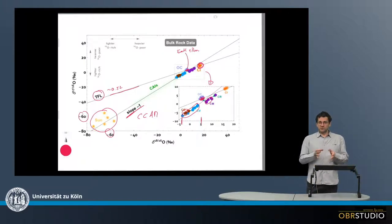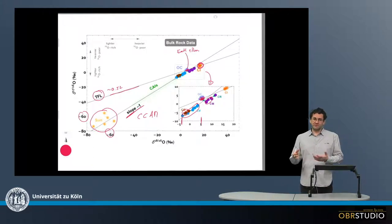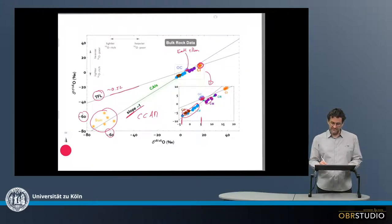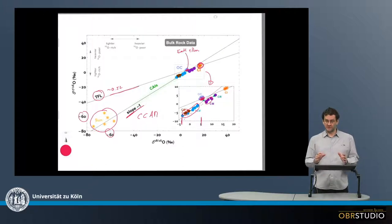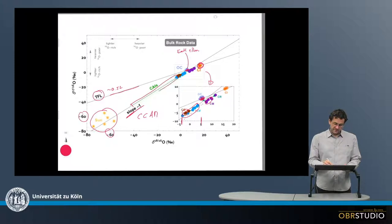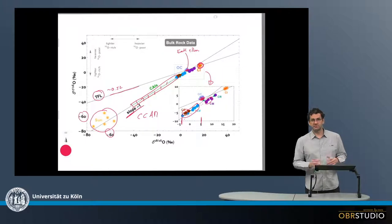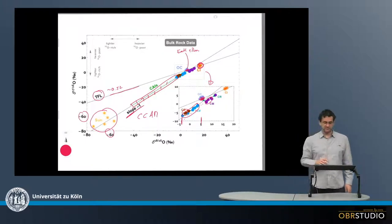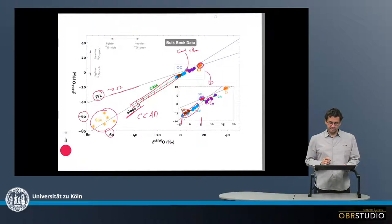If you would look at individual components, such as chondrules, they'd also plot along this line here. They also have quite a spread. Similar to this spread is the spread in the CAIs, calcium-aluminum-rich inclusions, which span this green sort of rectangle array here. They're all on the slope 1 line, but towards lighter compositions.